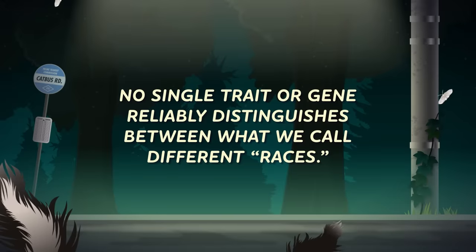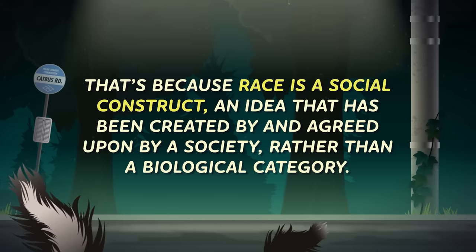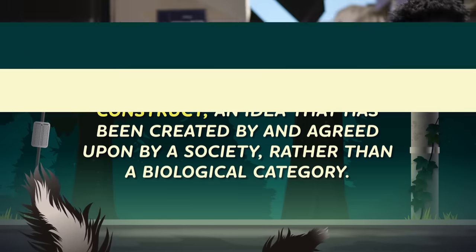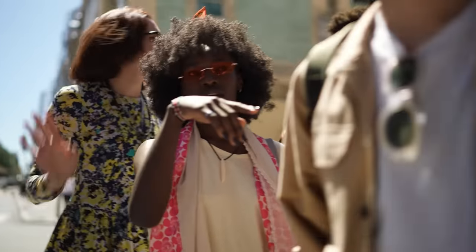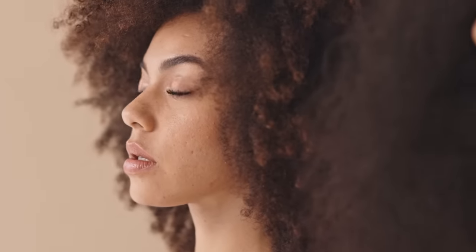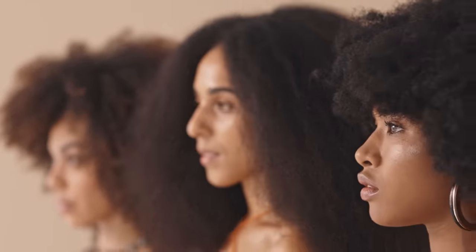In fact, no single trait or gene reliably distinguishes between what we call different races. That's because race is a social construct — an idea that has been created by, and agreed upon by, a society, rather than a biological category. Race describes a way that we group people based on traits that we've arbitrarily chosen to emphasize, like how much pigment is in someone's skin, or the texture or color of their hair. Often, when we view people through the lens of race, it leads us to assume incorrect things about their ancestry or their country of origin. Racial categories have overemphasized a handful of visible features that don't have clear-cut boundaries. Someone whose ancestors originated in China and Ireland obviously has DNA from both sides of the family, but because of how society emphasizes certain visible traits, that person might be labeled as racially Asian, erasing part of their ancestry without really saying anything in particular about their biology.